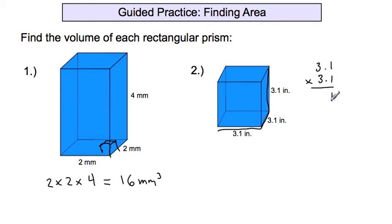1 times 1 is 1. 1 times 3 is 3. The placeholder, 3 times 1 is 3. 3 times 3 is 9. And then you add them all together. You get 1, 6, and 9. And where does the decimal go? It goes in one, two spaces. So if there's two decimal spaces in the factors, then there's two in the product, 9.61.